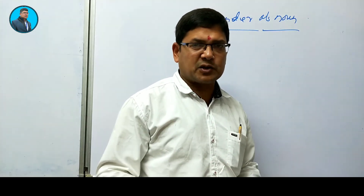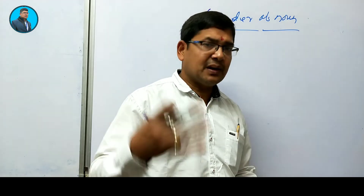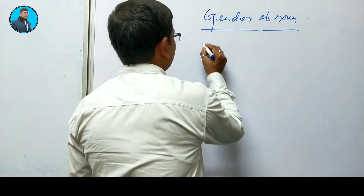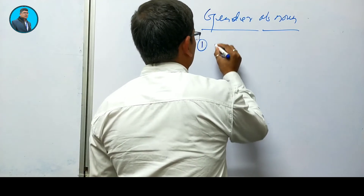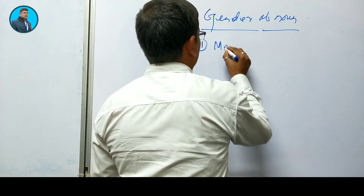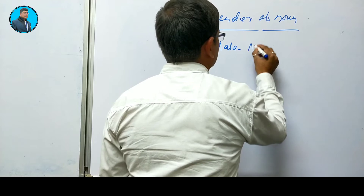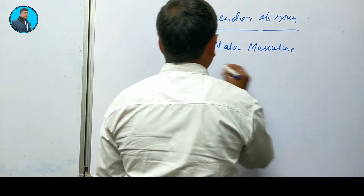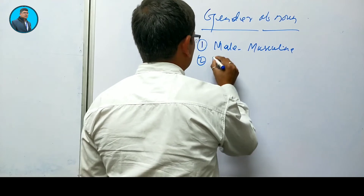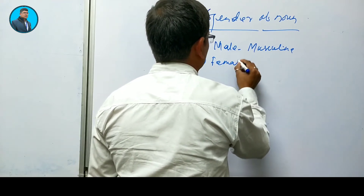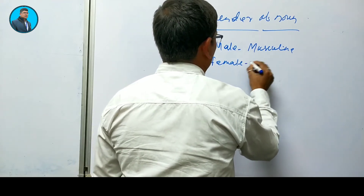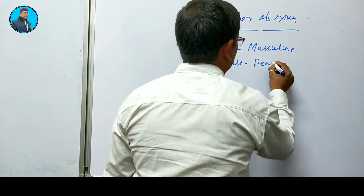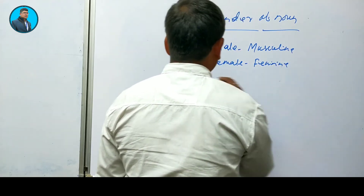In Tamil, Telugu, Sanskrit, or all Indian languages there are three types of gender: masculine, feminine, and neuter. But in English there are four genders. The first one is male, or you can say masculine gender. The second is female or feminine.